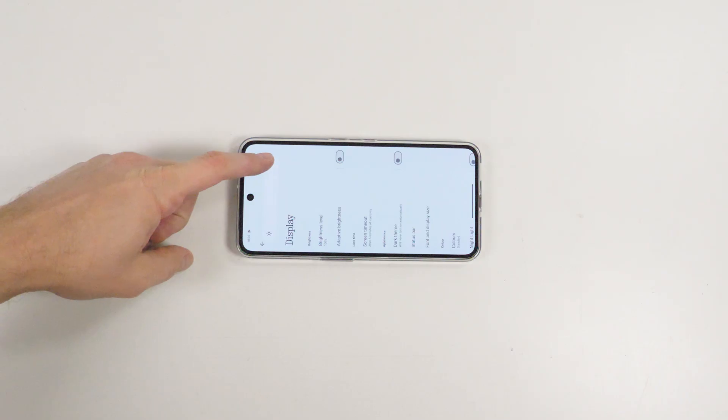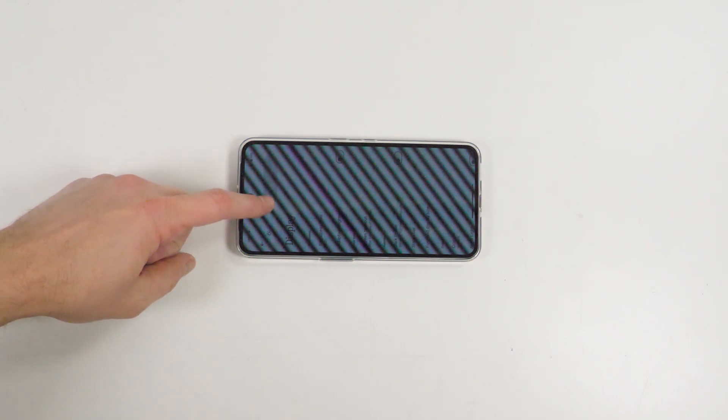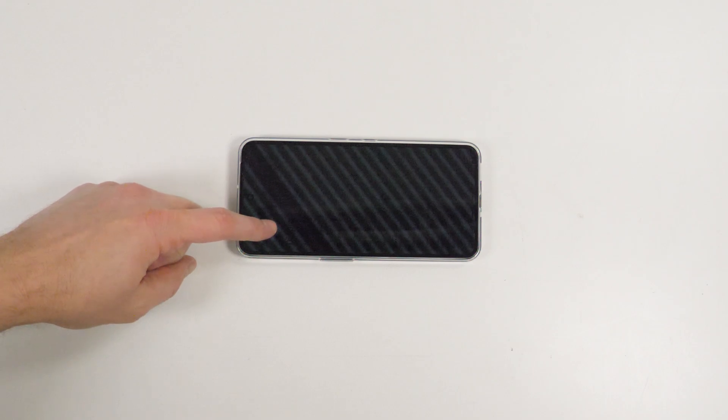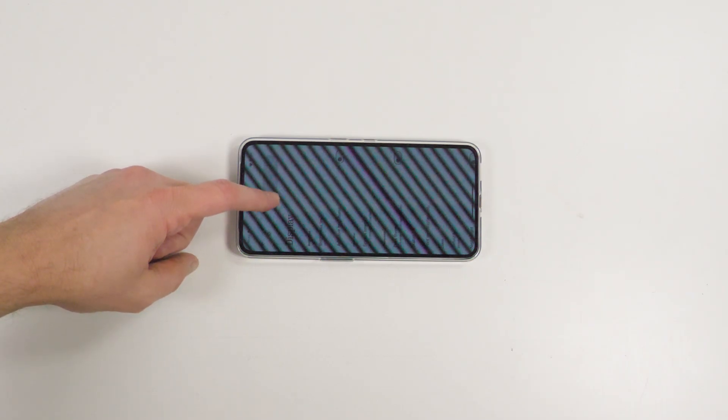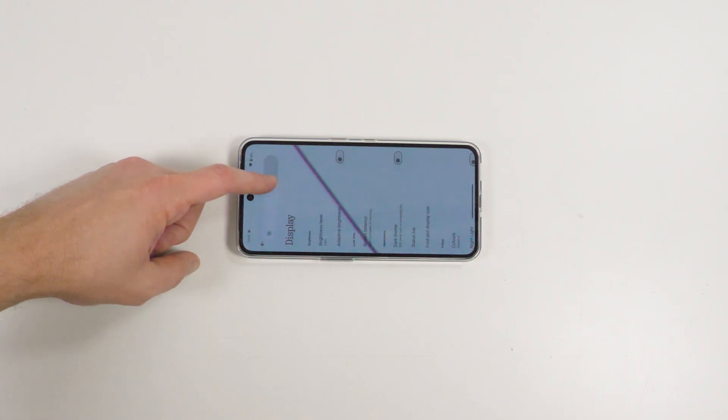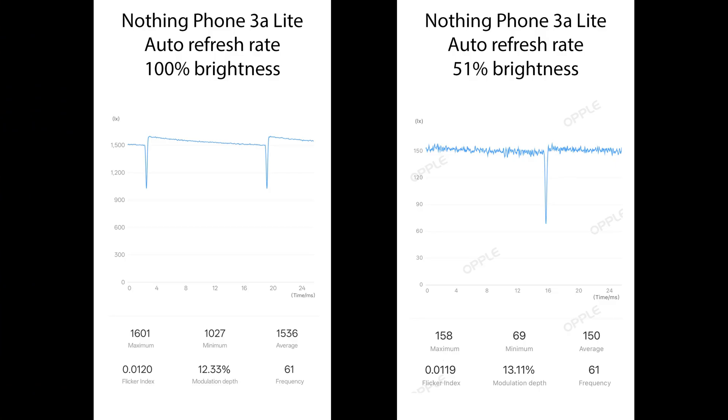As you might guess by now, this phone uses DC-like dimming above 50% brightness and 2160Hz PWM dimming below 50% brightness. This is identical behavior to nearly every other Nothing phone, specifically the 3A series, and modulation stays impressively low throughout the entire DC dimming range. I grabbed one sample at 51% here to show how low it is even at the bottom of the brightness range. Good stuff.